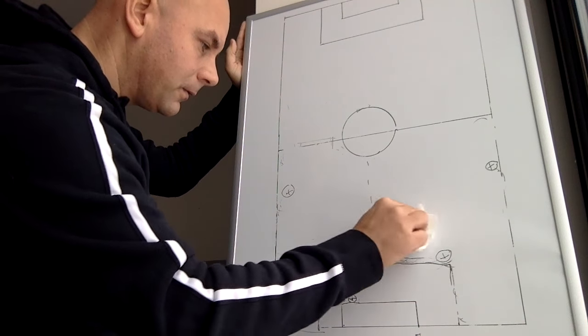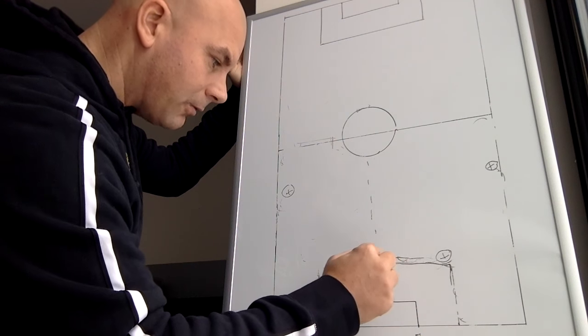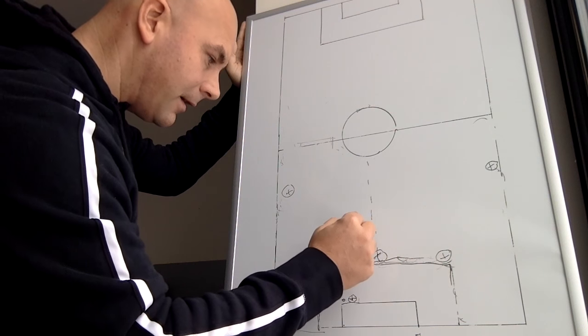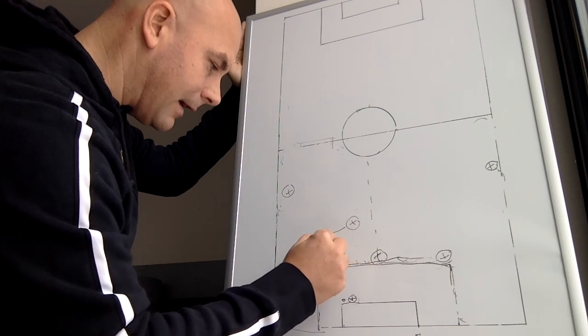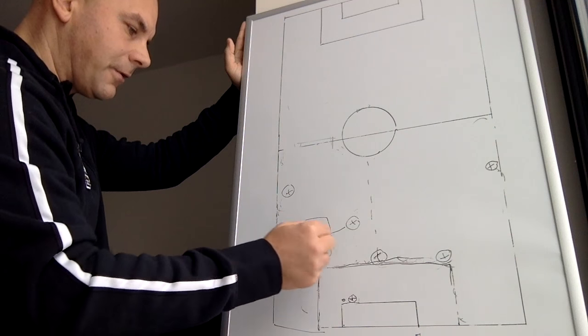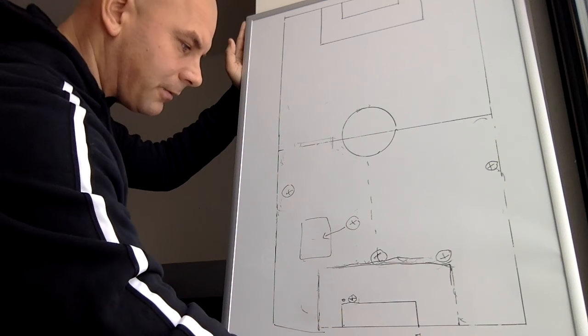I'll show you a few more. One of the other options is this. You could always pull one of those center backs, so you're favoring one side. Allowing a late and fast run from your defensive center mid to come into this area here and receive the ball. Just another different look. Another different option.